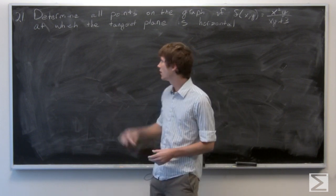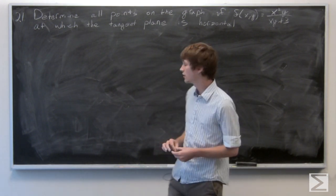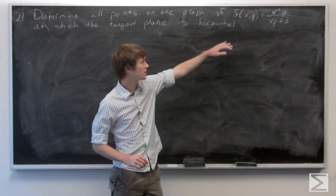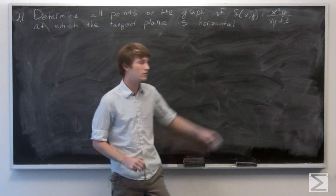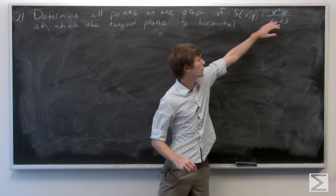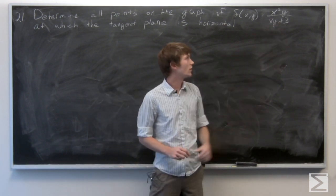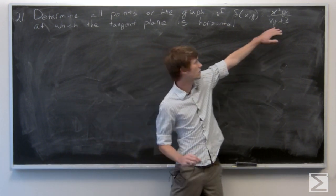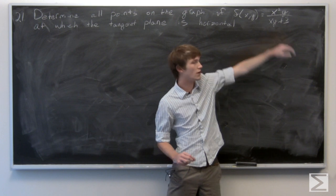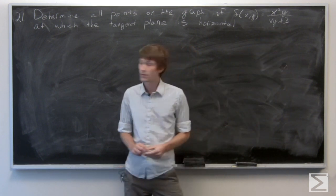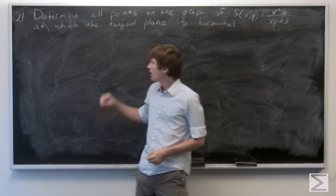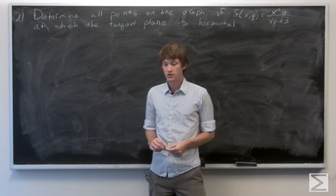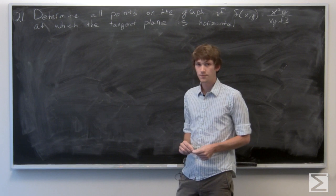In this problem, we're asked to determine all the points on the graph f of x, y equals the quantity x squared y over the quantity xy plus 3, at which the tangent plane is horizontal.